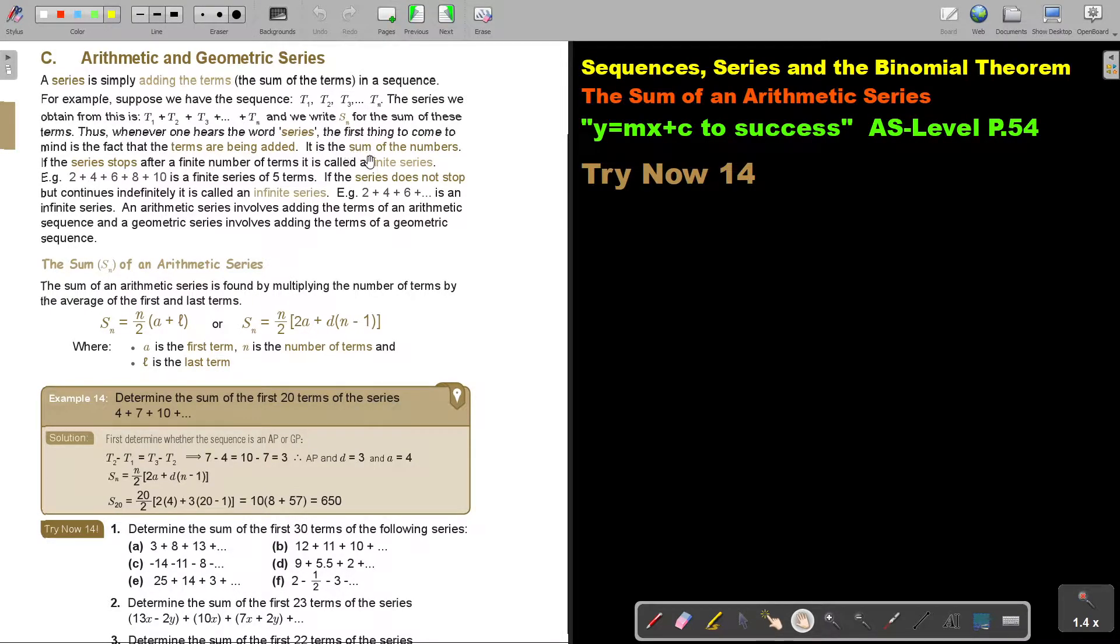And we write Sn for the sum of these terms, not Tn. Thus, whenever one hears the word series, the first thing to come to mind is the fact that the terms are being added. It is the sum of the numbers. If the series stops after a finite number of terms, it is called a finite series. For example, this is a finite series of five terms. If the series does not stop but continues indefinitely, it is called an infinite series.